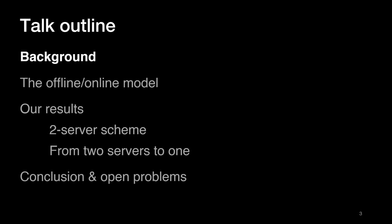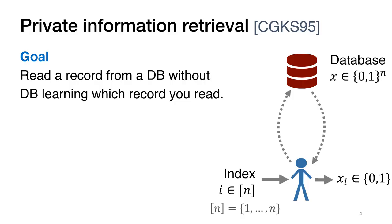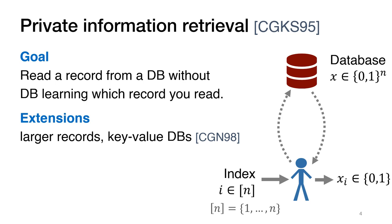Let me give a little bit of background about PIR. Private information retrieval, introduced by Shor, Goldreich, Kushilevitz, and Sudan, is a cryptographic protocol between a database and a client that allows the client to read any record in the database without the server learning which record the client is reading. Throughout this talk, we will model our database as an n-bit array, meaning each record is only a single bit. However, using standard techniques, PIR can be applied to databases with larger records, as well as to key-value databases rather than plain arrays.